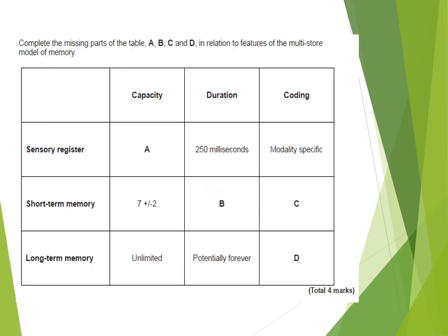Equally, you could be given a table where you have to write the information in yourself — you haven't been given the information, you need to remember it and put it in the correct place. A is the sensory register — that is sensory memory — and its capacity, which is unlimited. B is short-term memory duration: approximately 18 to 30 seconds. C is short-term memory coding, which is mainly acoustic. D is long-term memory encoding or coding, which is mainly semantic.